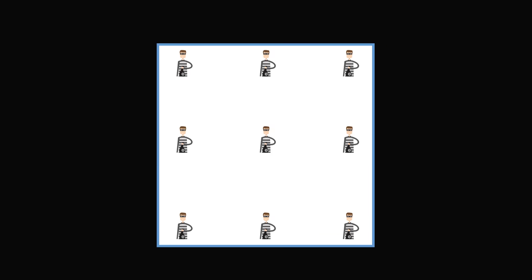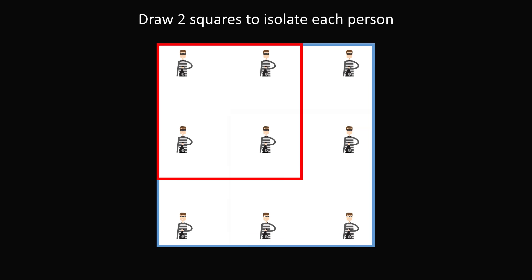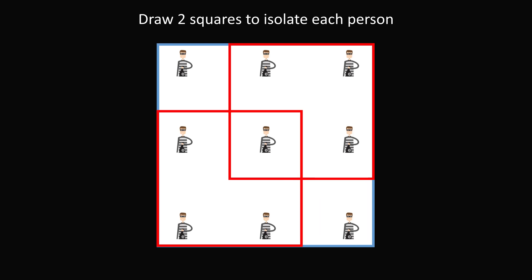Puzzle 6. We have a square and nine prisoners inside arranged in a 3x3 grid. The challenge is to draw two squares to isolate each person. Starting with a 1x1 square, drawing two squares will only isolate a couple of people. With a 2x2 square, we might isolate one person in the center, but the others are not all isolated. No matter how we move these squares, we cannot isolate every single person — so we need to think more cleverly.